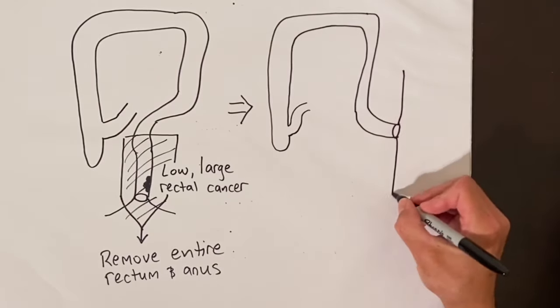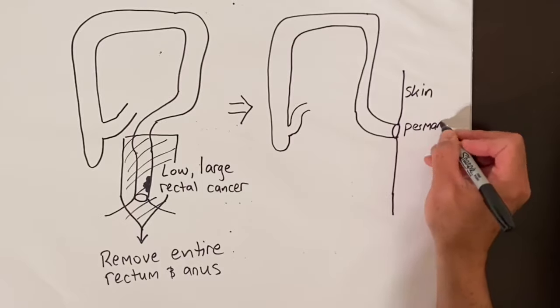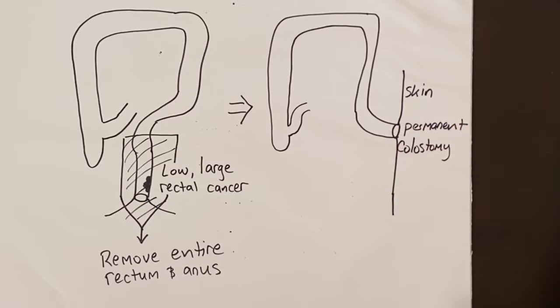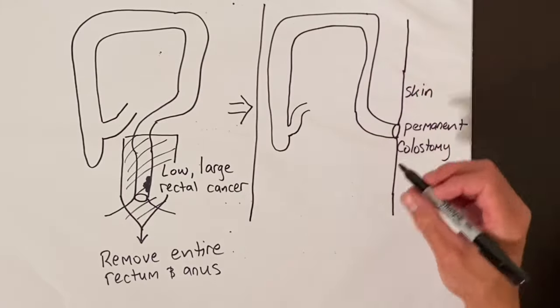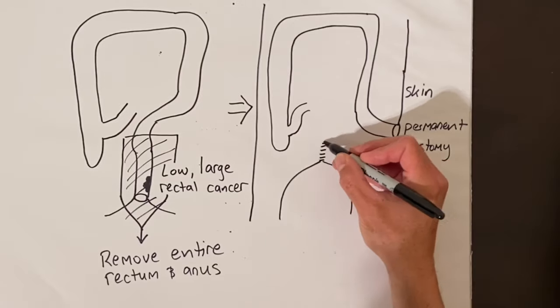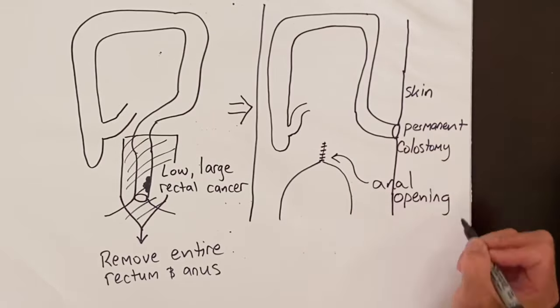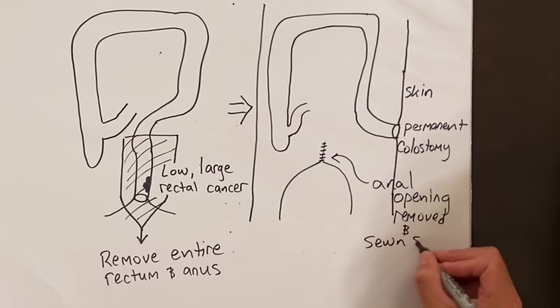This obviously requires a colostomy, which is brought up to the skin from the end of the remaining colon, and this is a permanent colostomy for the rest of your life. This surgery is called an abdominal perineal resection, abbreviated as APR.